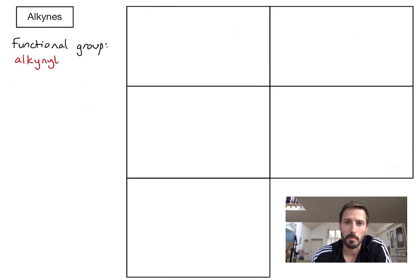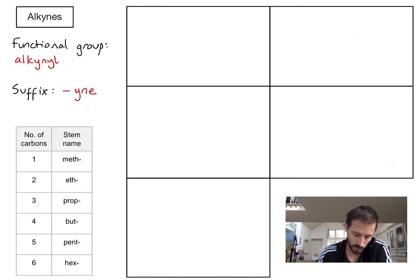The key thing to know about when naming alkynes is that the suffix or the end of the name is going to be yne. For reference let's also include our table of stem names here which relates to the number of carbons in the main chain and then the central part of the name of that compound.